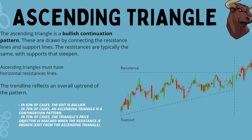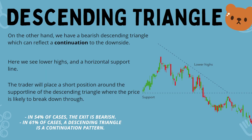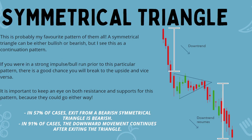The descending triangle is the bearish continuation pattern. We see lower highs with horizontal support — two converging lines. The breakout to the downside usually happens before the lines converge. We're getting lower highs, the support is being retested multiple times, creating a weaker support. You place a short position below the support line with a stop loss just above it, waiting for a retest and rejection before entering. In 54% of cases the exit is bearish, and in 61% of cases it is a continuation pattern.